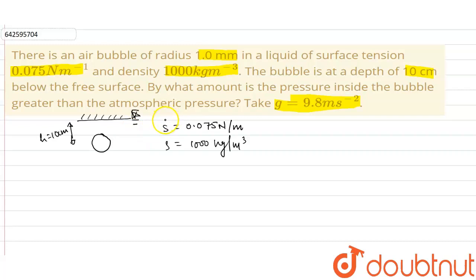We have to find by what amount the pressure inside the bubble is greater than atmospheric pressure. Let us suppose at the free surface atmospheric pressure P₀ is acting. Now the pressure of the liquid just outside the bubble will be P = P₀ + ρgh. This will be the pressure outside the bubble.